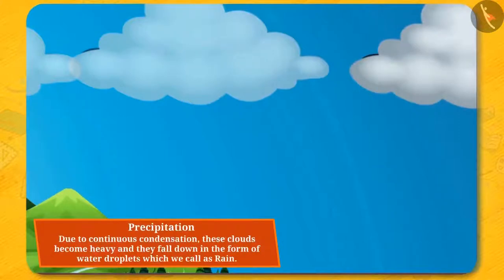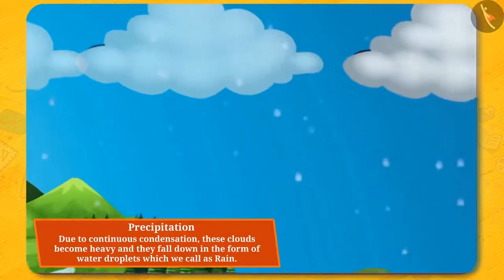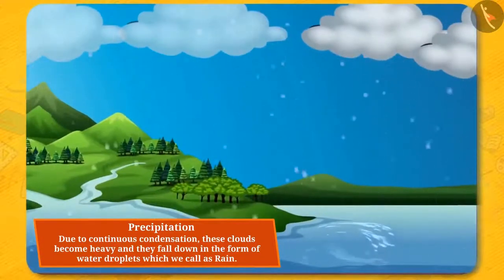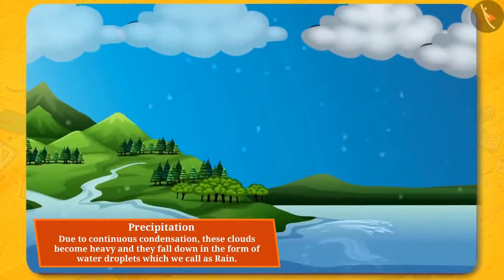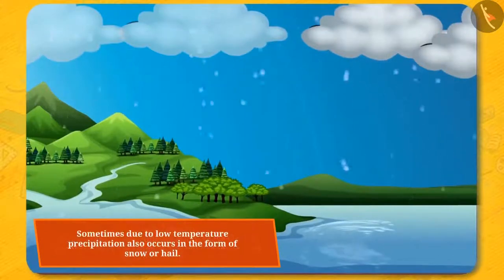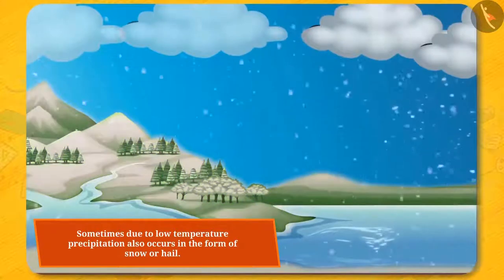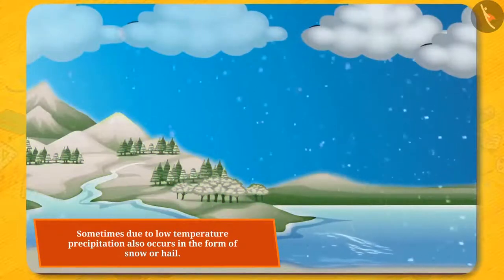And this process is called condensation. Due to continuous condensation, these clouds become heavy and they fall down in the form of water droplets, which we call rain. This process is called precipitation. Sometimes, due to low temperature, precipitation also occurs in the form of snow or hail.